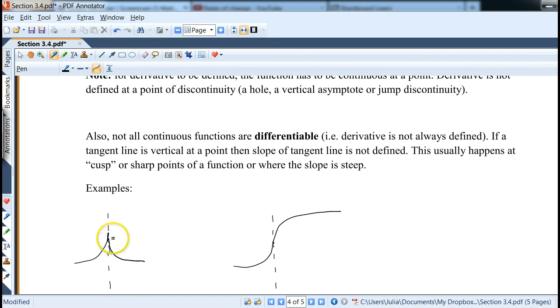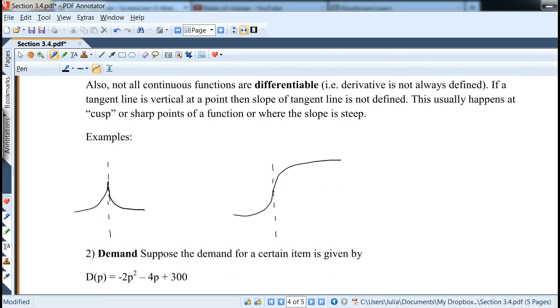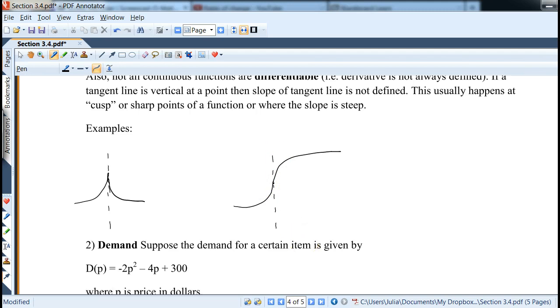So anytime it looks sharp like this, or anytime it looks like it's the greatest growth, that's where the derivative is not defined. So there's few examples in the homework where you have to look for either discontinuities, or sharp points, or points like this, where it looks like it's going to be vertical. Tangent line is going to be vertical.